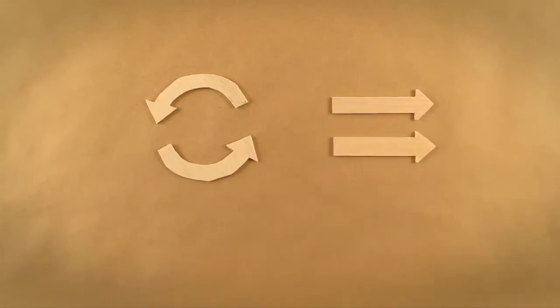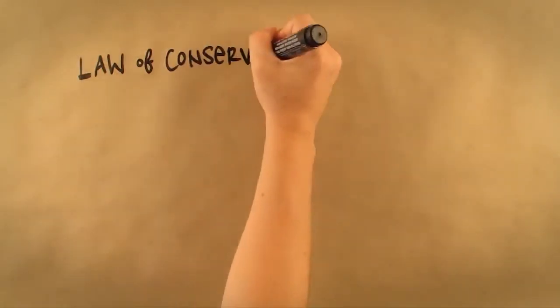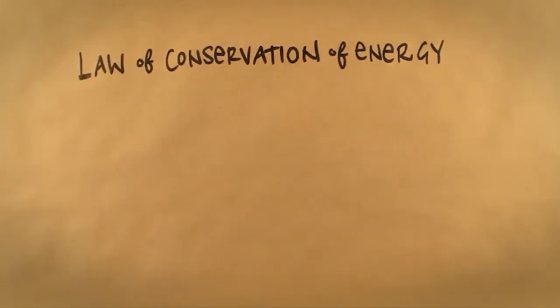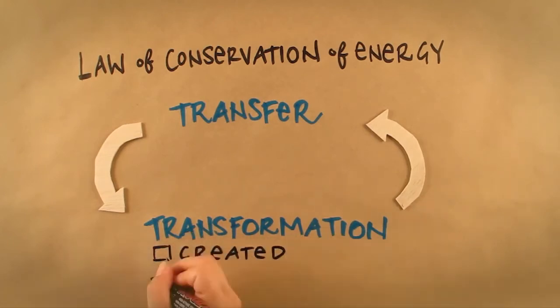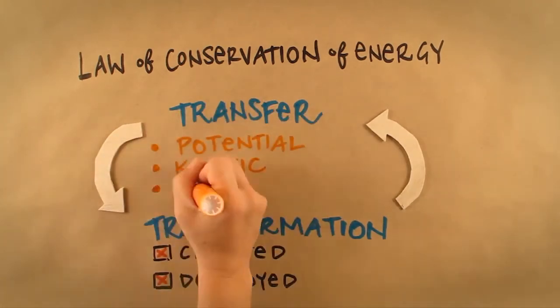To start with, we need to understand that the law of conservation of energy states that total energy is maintained in energy transfer and transformation. Energy is neither created nor destroyed, and it can be in the form of potential, kinetic or chemical energy.